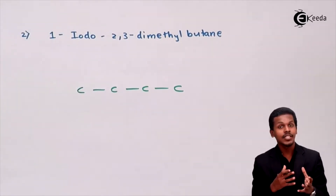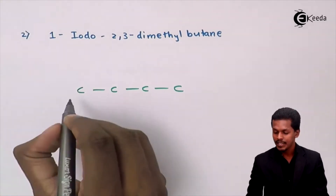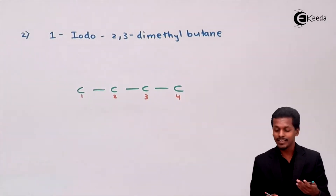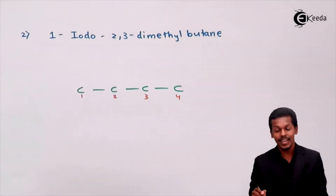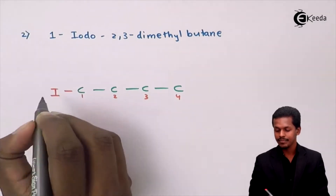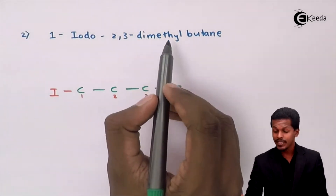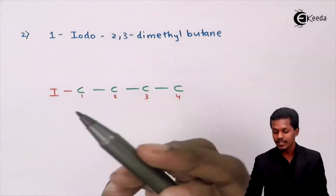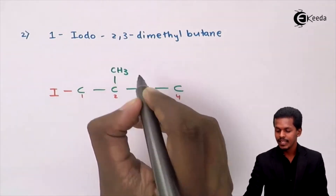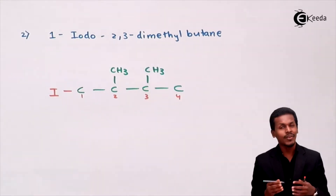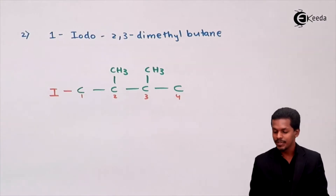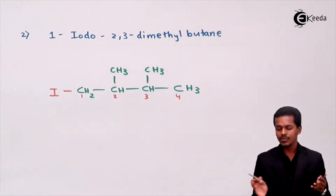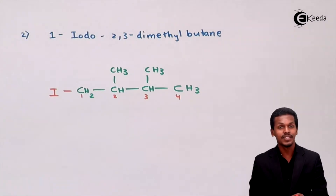Now let us number the carbons and look at the substituents. The substituent is iodine attached to the first carbon atom. There are also two methyl groups — dimethyl — attached at carbon number two and carbon number three. After fulfilling the hydrogen valencies: carbon 1 is CH3 (with iodine), carbon 2 is CH, carbon 3 is CH, and carbon 4 is CH3, with methyl groups at positions 2 and 3.